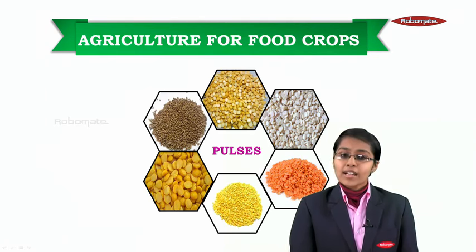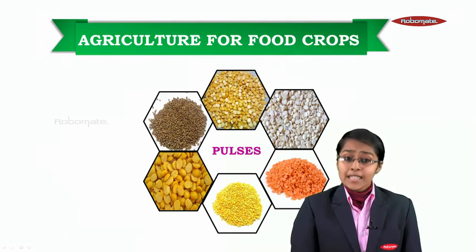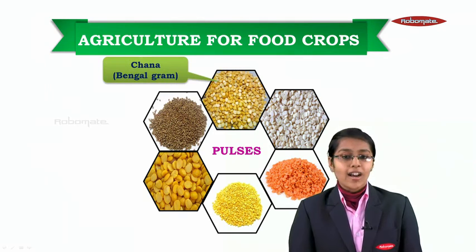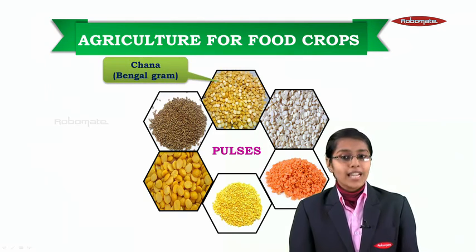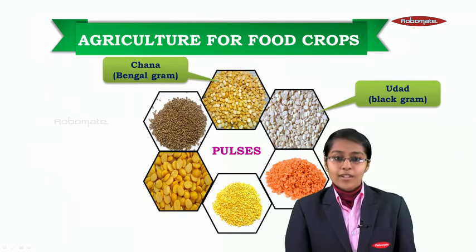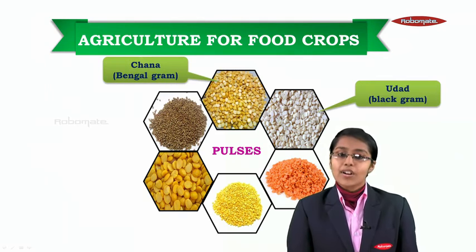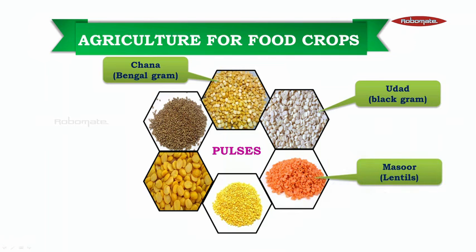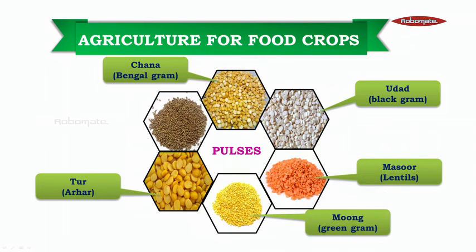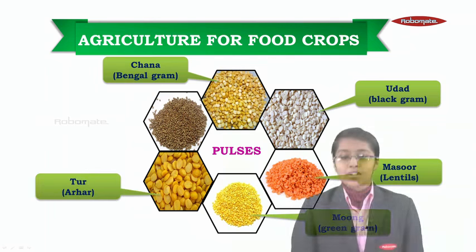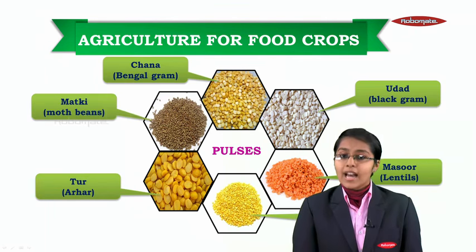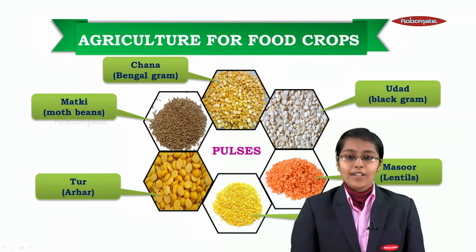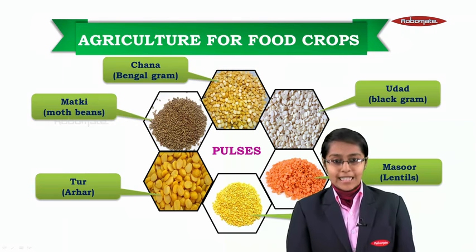It also includes some pulses like chana, also called as Bengal gram; udad, called as black gram; masoor, called as lentils; moong, called as green gram; toor, called as arhar; and matki, also called as moth beans.